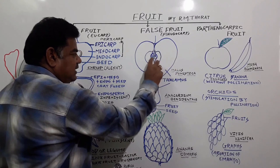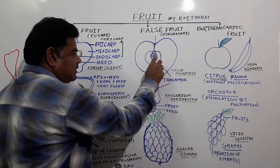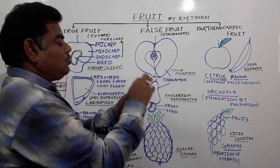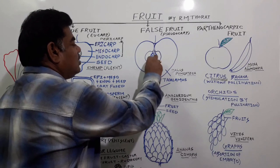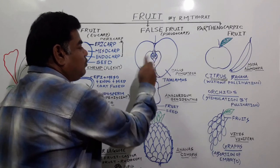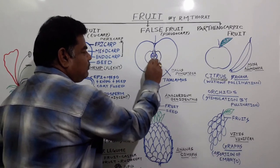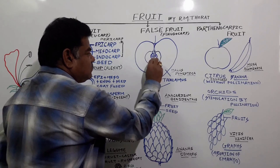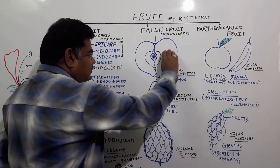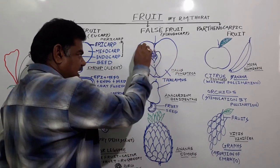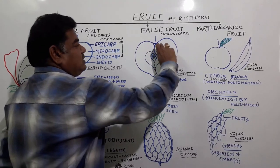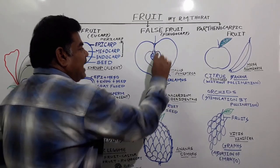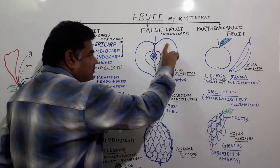This structure is nothing but the ovary — like this ovary. The fruit in the case of apple is the ovary part, which is covered with the thalamus. So in the case of apple, the thalamus gets converted into a covering structure over the fruit. Apple is a false fruit — a pseudocarpic fruit.